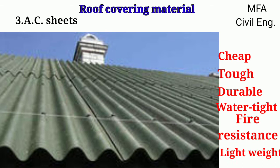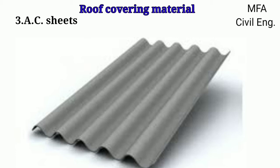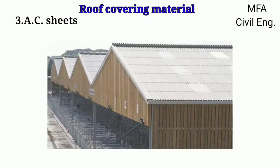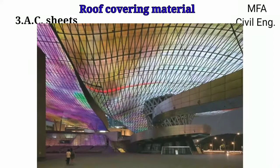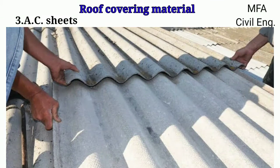Asbestos cement sheet does not require any protective paint and cannot be eaten away by worms. On account of these properties, asbestos cement sheet covering is commonly used as a roof covering material for factories, workshops, offices, garages, generating stations, cinemas and residential buildings. Asbestos cement roof covering also has the added advantages of low maintenance cost and high speed of construction.